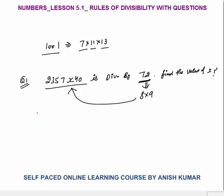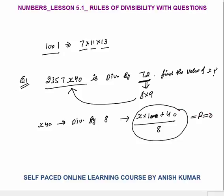The number is divisible by 8, so the last 3 digits must be divisible by 8. The last 3 digits are x40. We can write this as x×100 + 40. This must be divisible by 8. Applying the remainder concept and replacing numbers with remainders: 40 is divisible by 8. So x×100 must also contribute remainder 0.